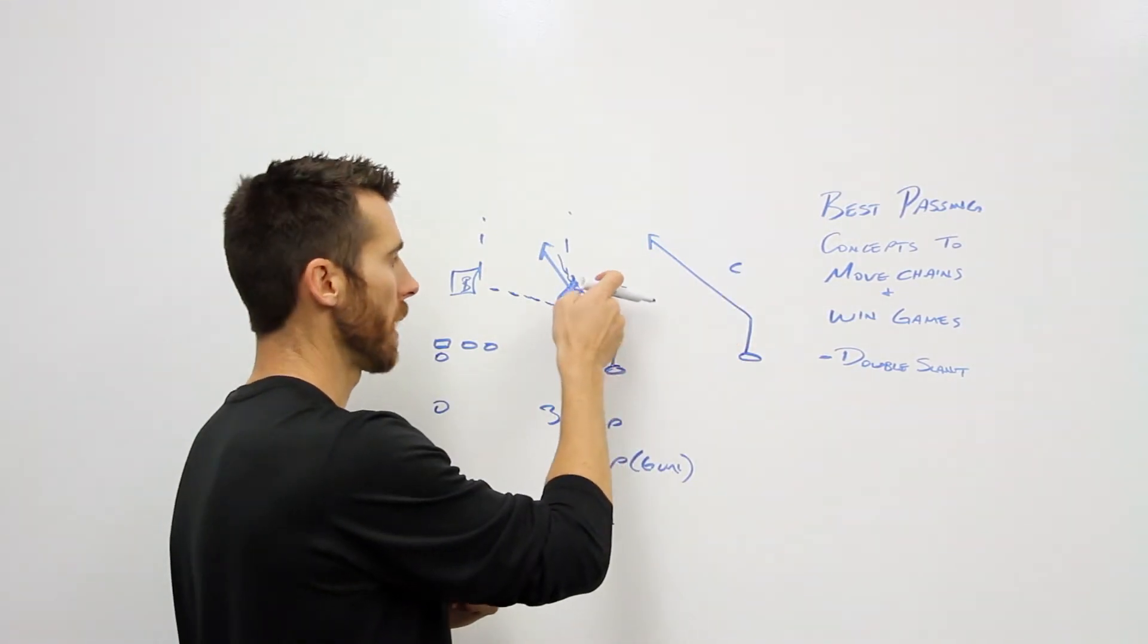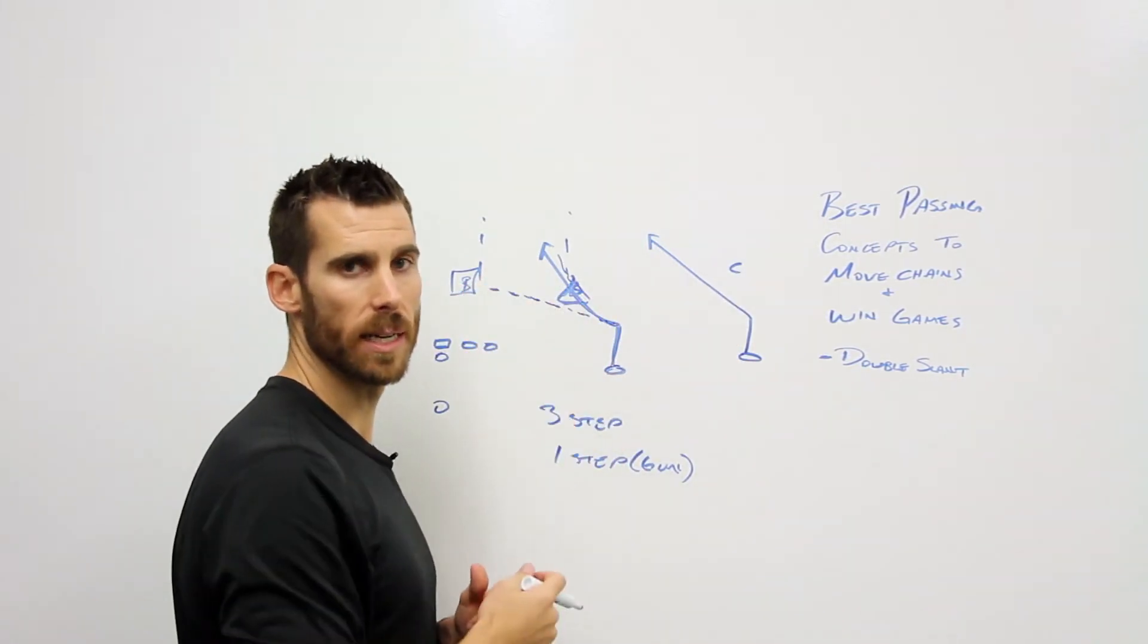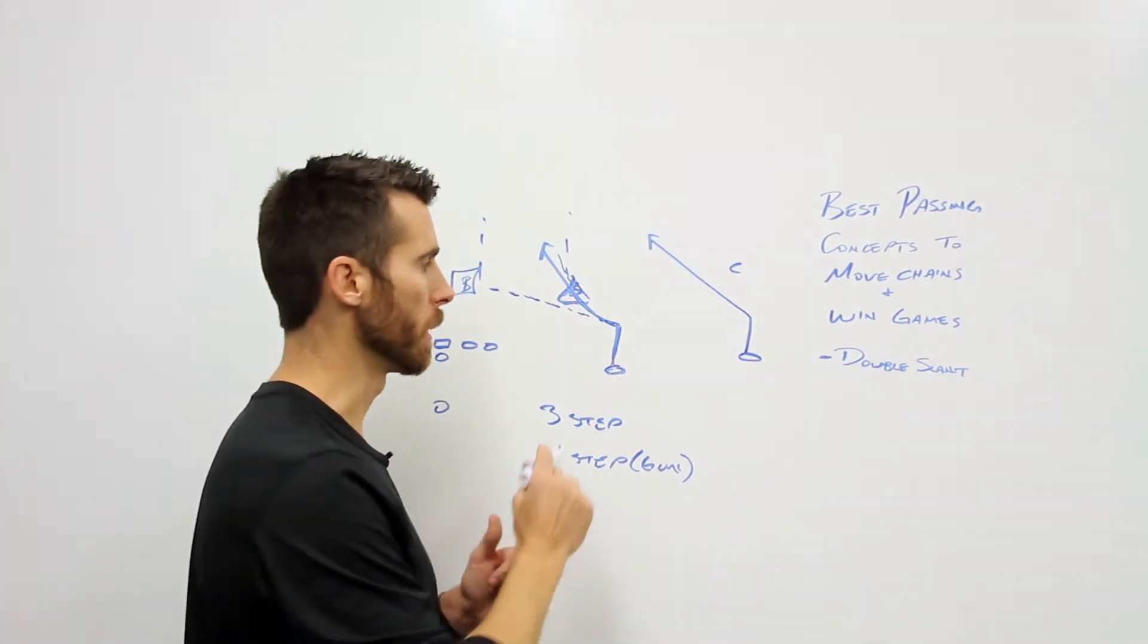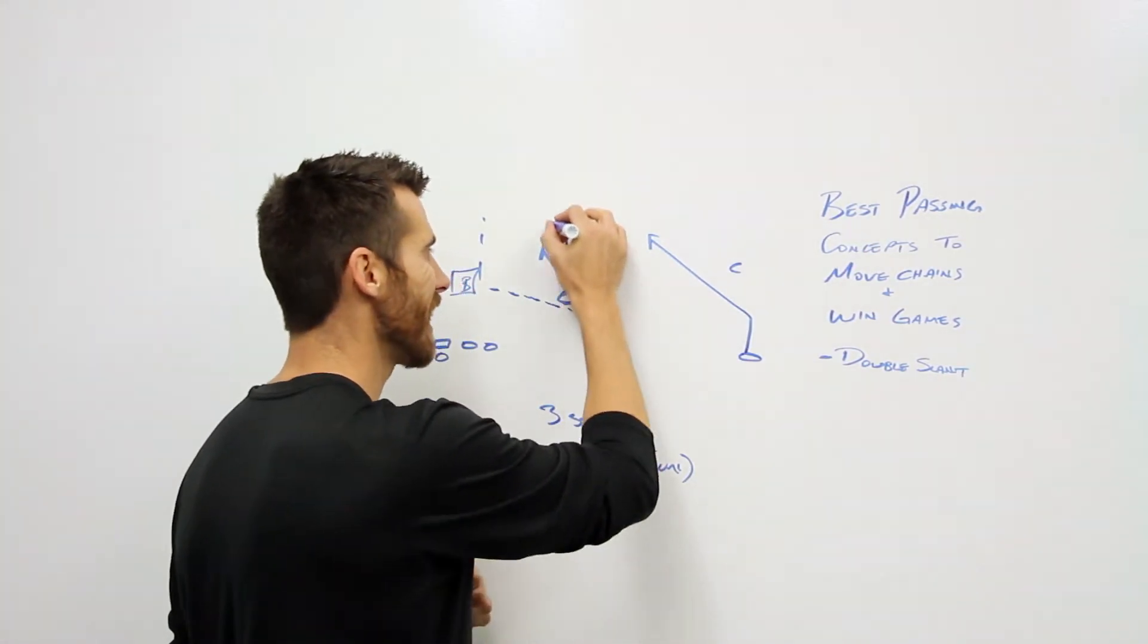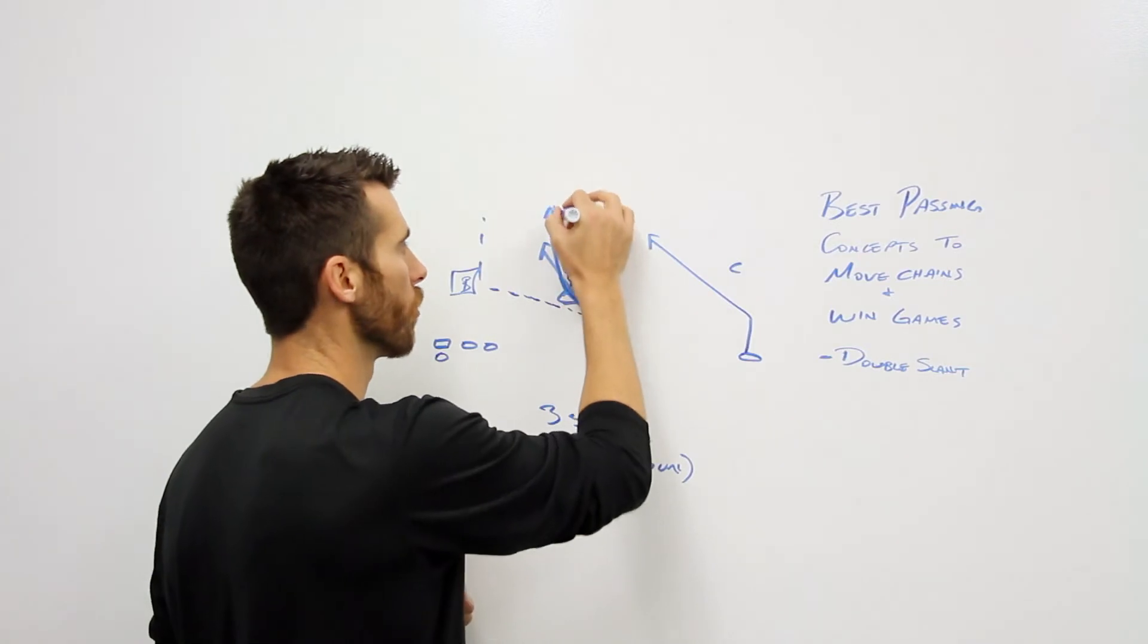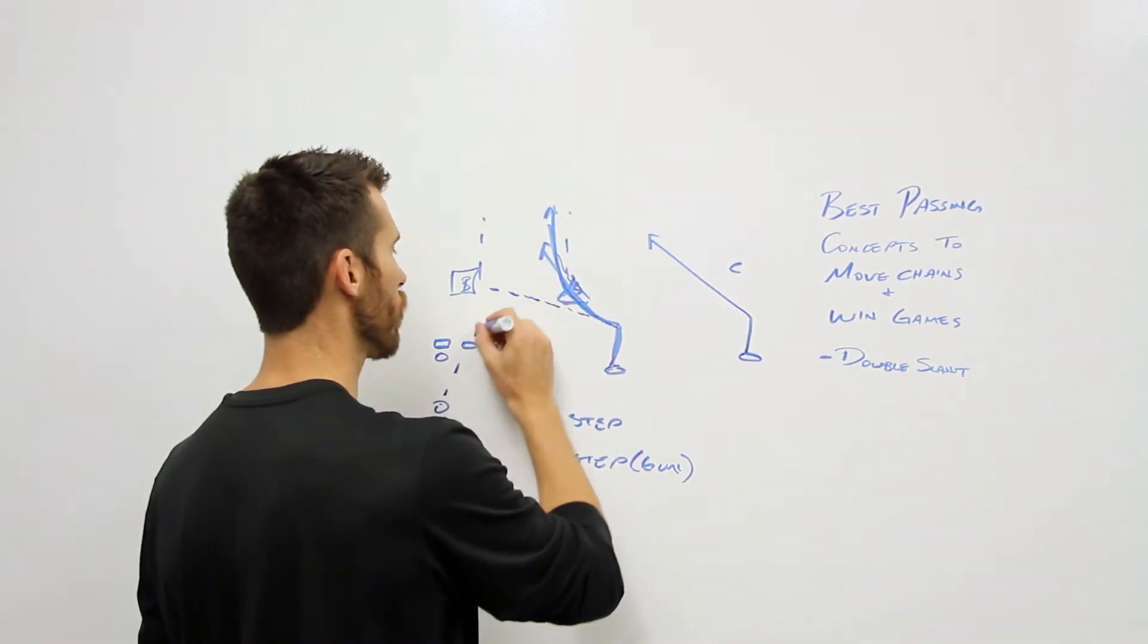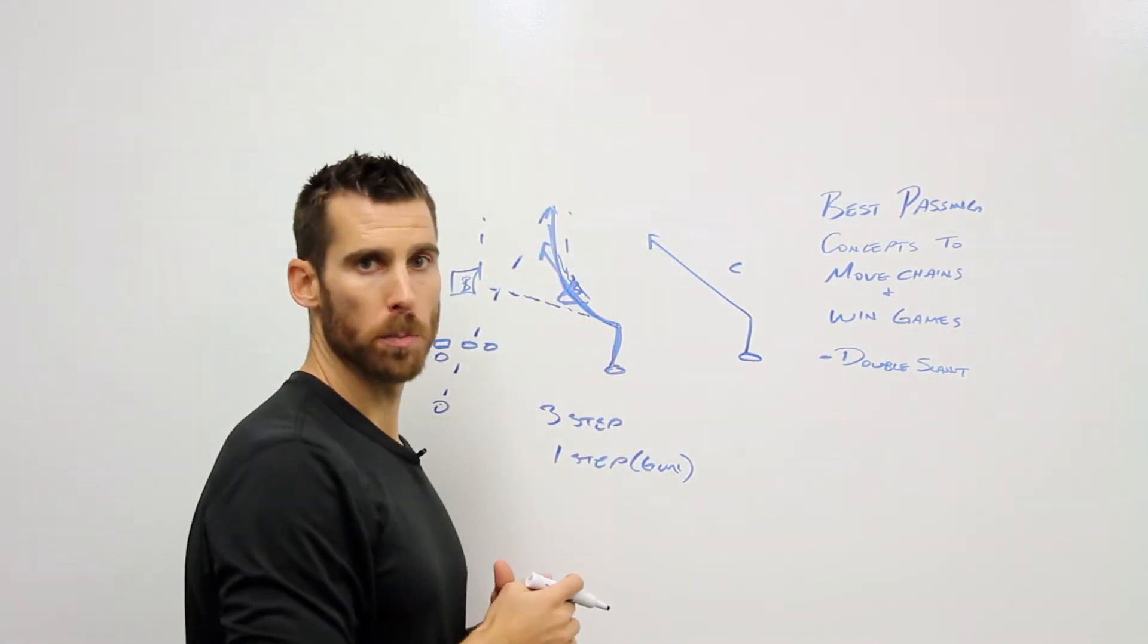Corners number 1, outside backers number 2, the number 3 guy is the inside linebacker. He shouldn't ever get to play football here. So we want to get inside of that route. As you see we're going to bend that vertical once we get inside so we can keep that throw away from this problem right here.